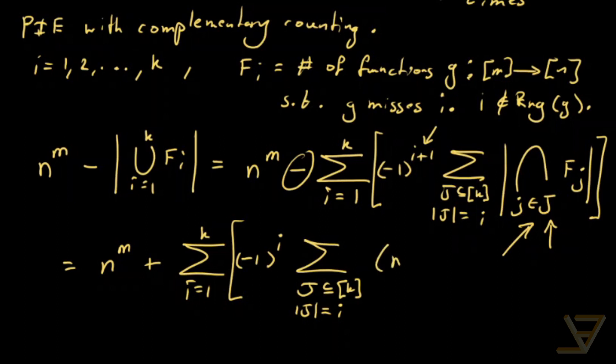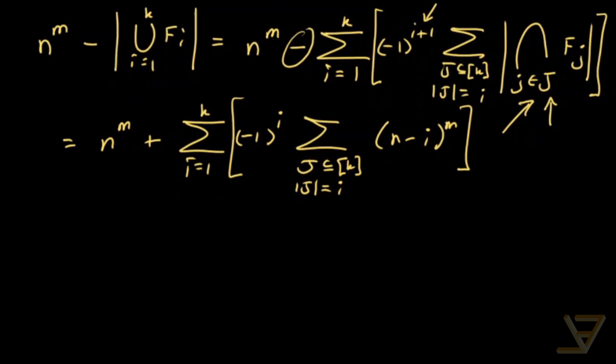And that is equal to n minus i to the power of m. Because there used to be n things in the range, we don't hit i of them, so we get n minus i. And there are m positions in the domain. And since they're all the same...